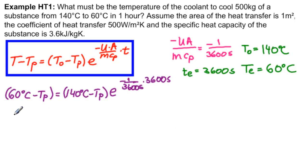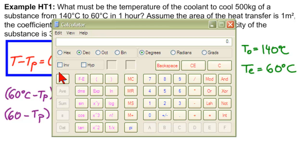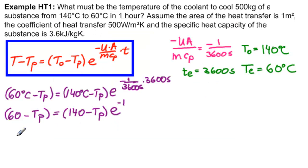So we have 60 minus TP, we'll write it without the units because we got all our units straight, equals 140 minus TP times e to the minus 1. Get our calculator. E to the minus 1 is 0.3679. So we have 60 minus TP equals 140 minus TP times 0.368.